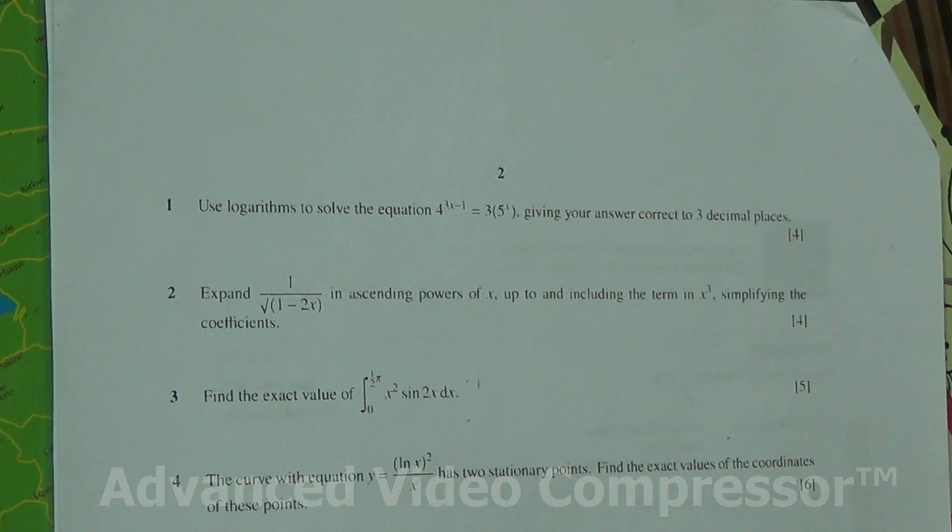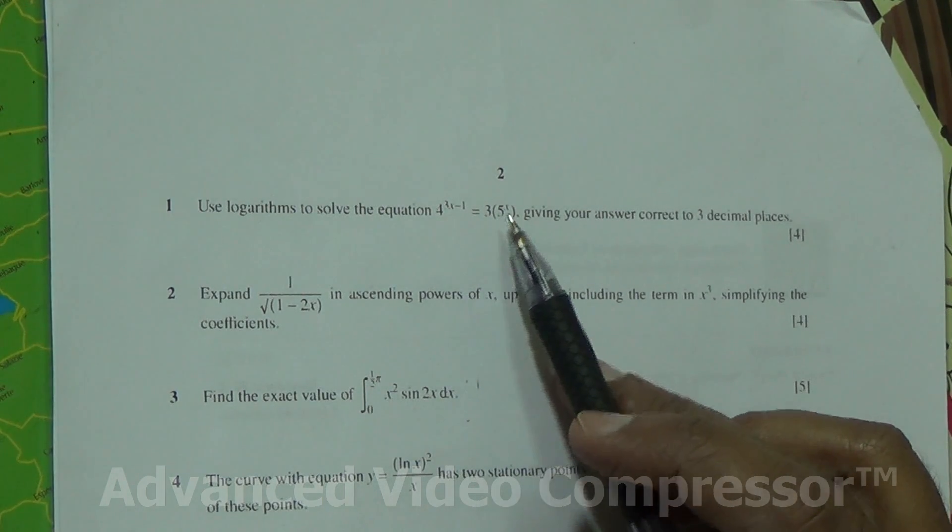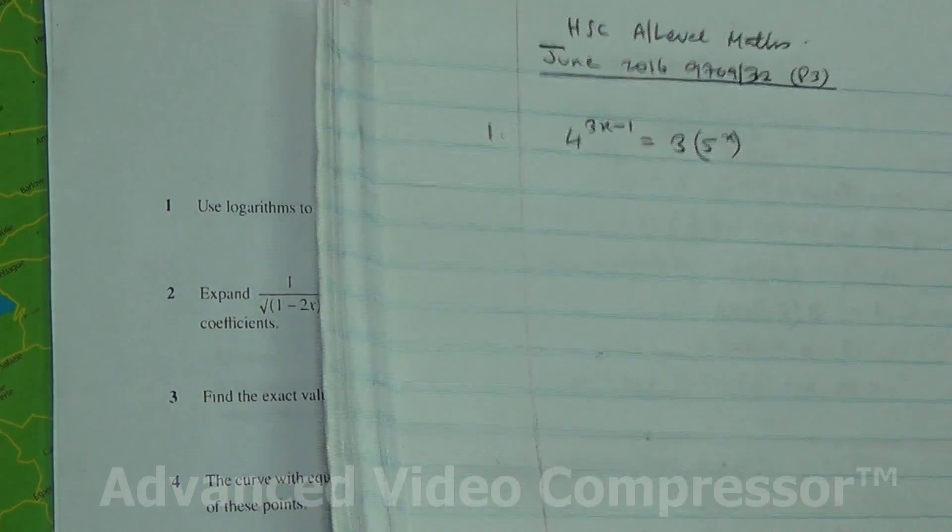Hi. Question number 1: Use logarithms to solve the equation 4 to the 3x minus 1 is equal to 3 times 5 to the x, giving your answer correct to 3 decimal places.